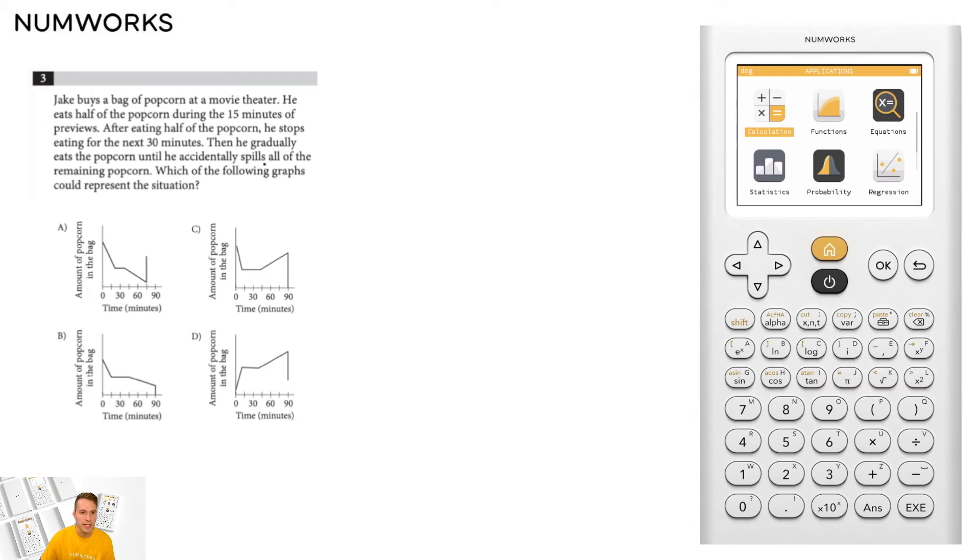A key thing to see here is that at the end, he accidentally spills all of the remaining popcorn. So the amount of popcorn in the bag at the end of our graph should be 0, like we see in options B and C.